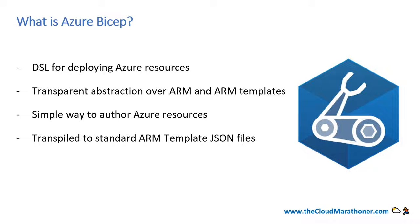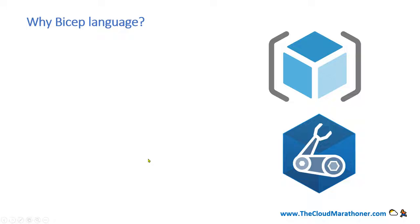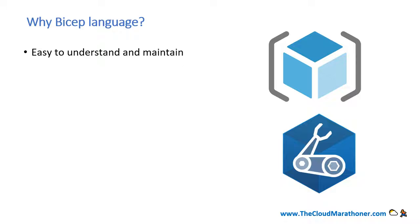What Azure Bicep code does is transpile into ARM template JSON files. A valid Azure Bicep file will always compile and transpile into ARM template JSON, but it is much easier to manage than big growing JSON files. Next, why should you learn Azure Bicep? You can accomplish similar things using ARM JSON templates, so what are the good things you get from Azure Bicep that make it worth the investment?